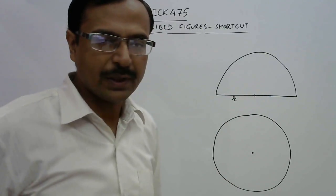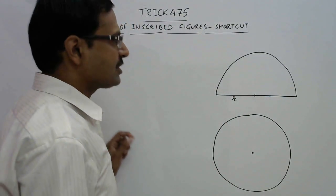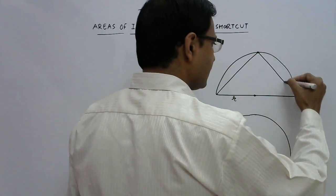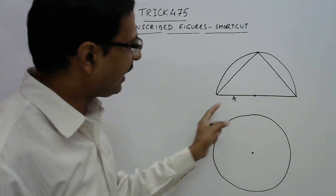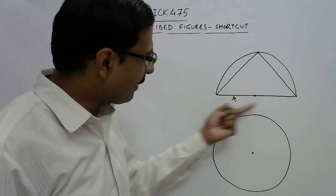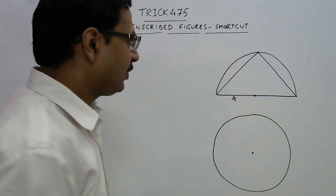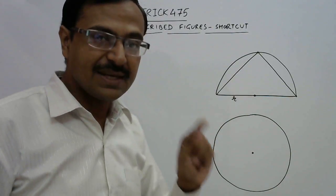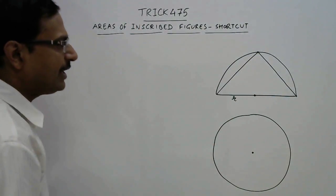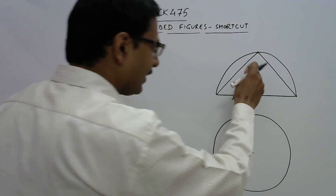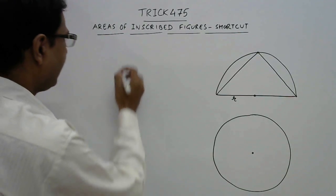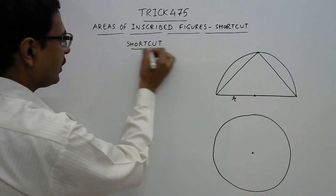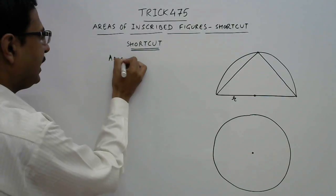I am going to inscribe one figure in each shape and apply a shortcut. Suppose I inscribe a right angle triangle inside the semicircle, with the diameter as the base. This is the radius of the semicircle. Now I want to find the area of this inscribed triangle. Whenever we have a triangle inscribed in a semicircle, here is the shortcut.